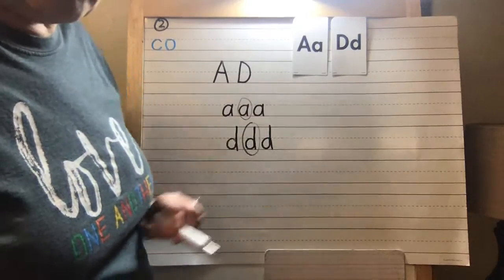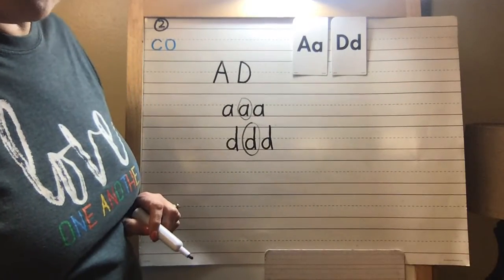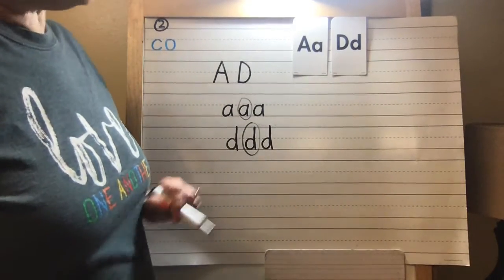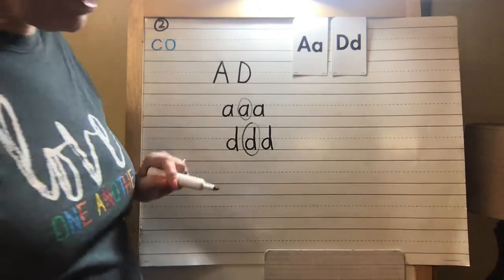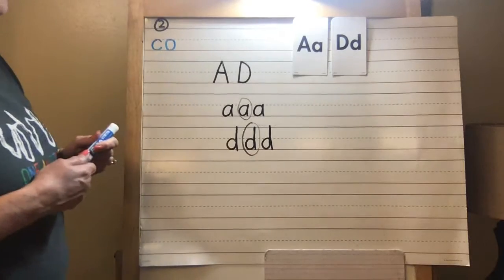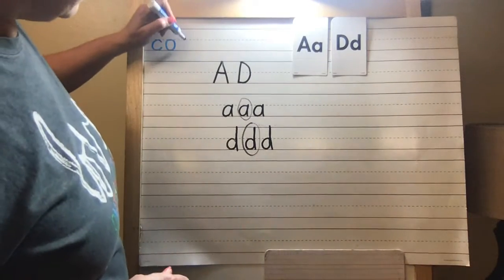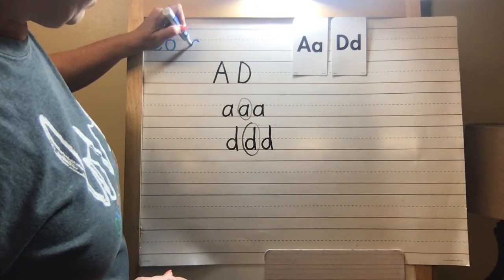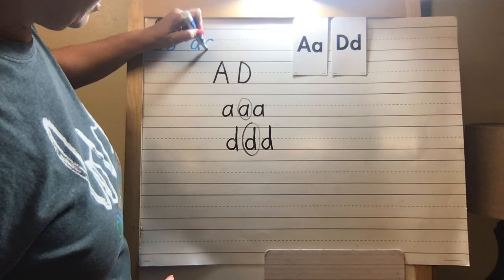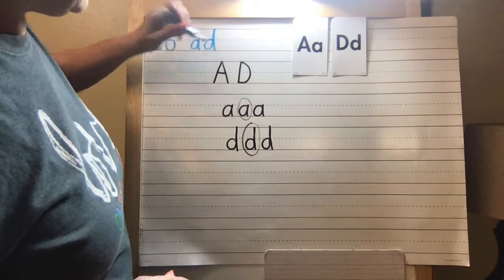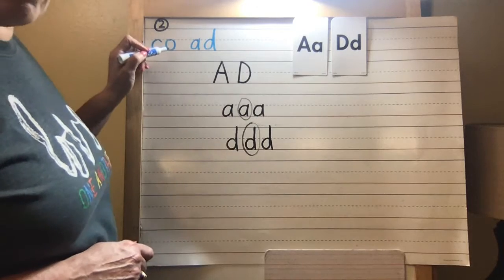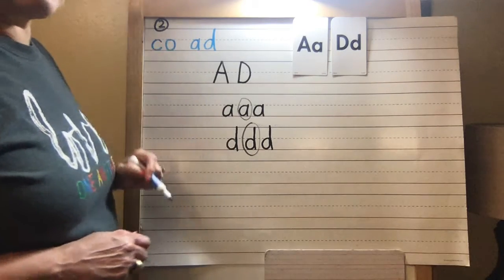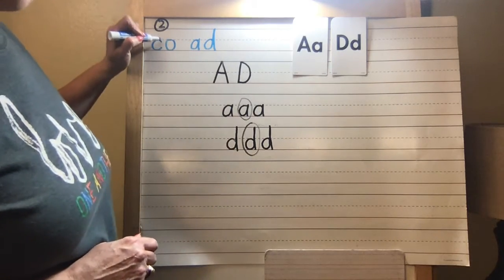Remember, you're going to go all the way across when you do yours. And always make sure that once you learn these letters, we're going to put these letters right up here. Now we have the A and the D. So we have C and O, A and D, that we know how to start them.